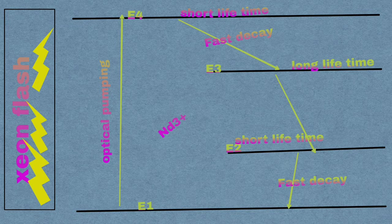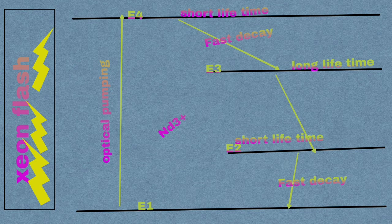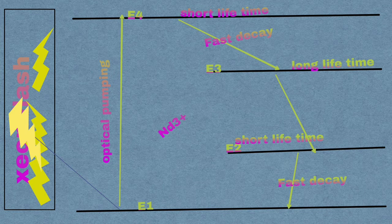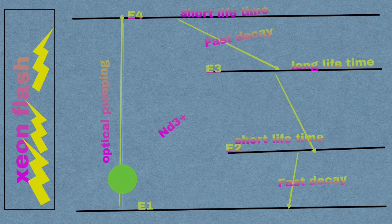Next we are going to see about working. When xenon flash lamp is switched on, it emits 1000 joules of light energy discharged in a few milliseconds. A part of this light energy flashes on the Nd:YAG rod. Then the Nd3+ ions are excited to higher energy state E4 from ground state E1 by absorbing the light.